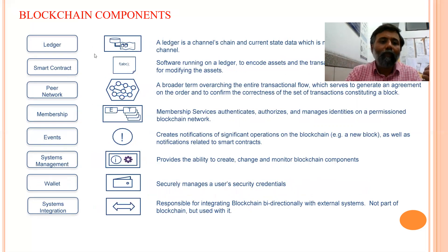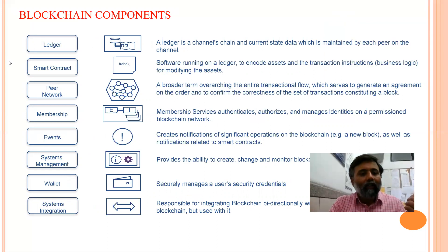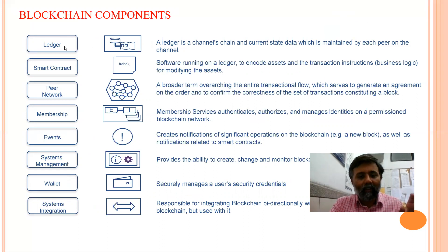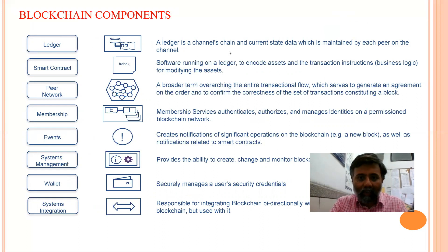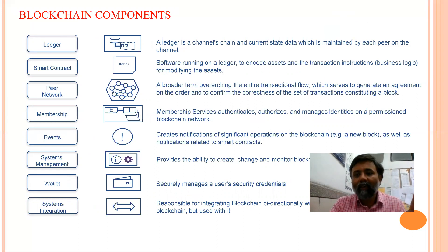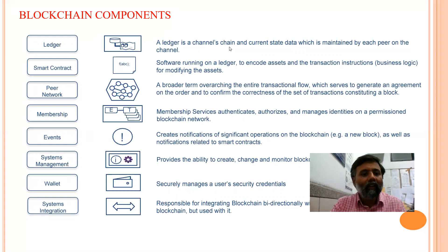Now about the blockchain components — the very important part in any blockchain solution is the ledger. A ledger is basically a channel's chain, and the current state of data is maintained by each peer on the channel. I will talk about the channel and the chain in the next video lecture, and in this lecture I will talk in more detail about the ledger.